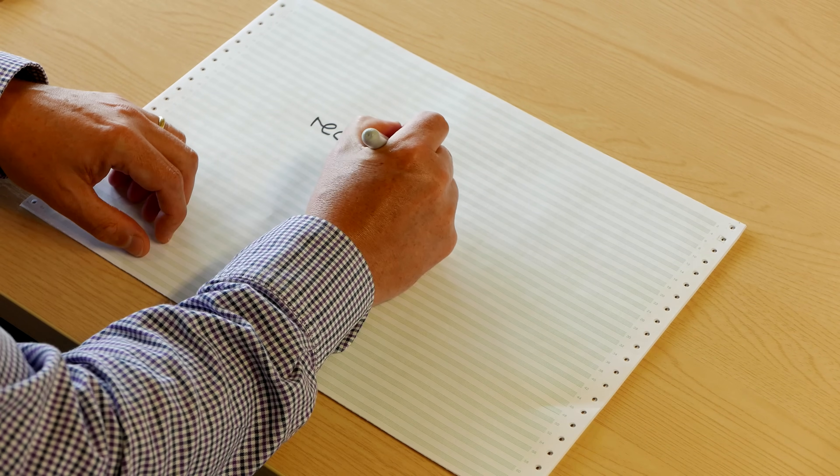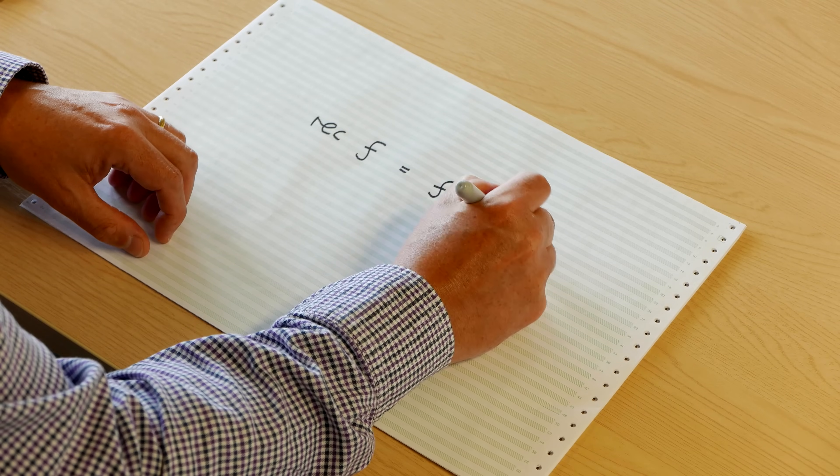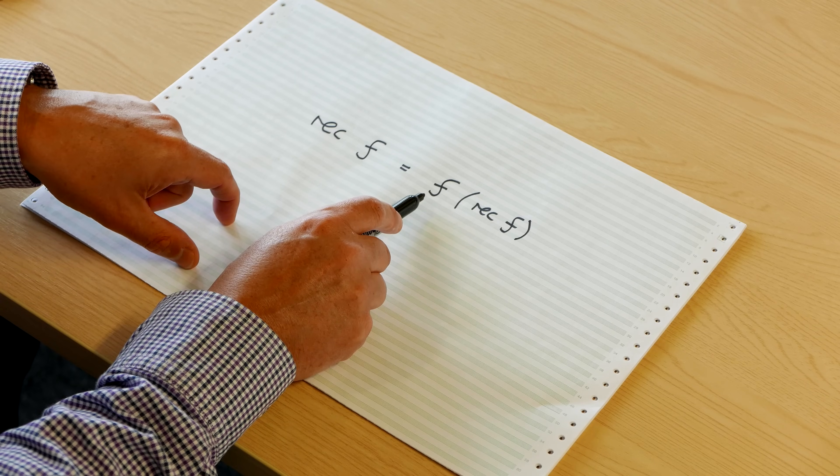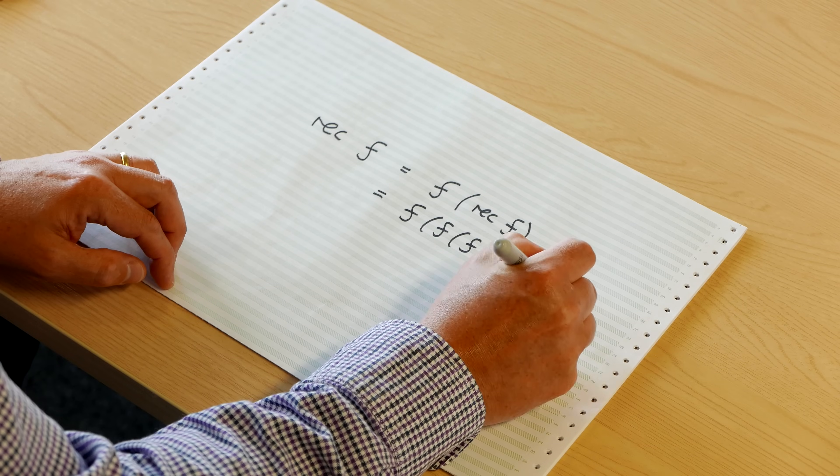Now let's have a more general example of recursion. We define a function called rec that takes another function as input and applies that function to rec of f. This is recursive because rec of f is defined in terms of rec of f, but it's not just looping — there's a function f in the way. Unwinding this definition, you get f of f of f of f applied forever. This turns out to be the idea of general recursion — the most general pattern of recursion you can have. Any other recursive function can be encoded in terms of this one.